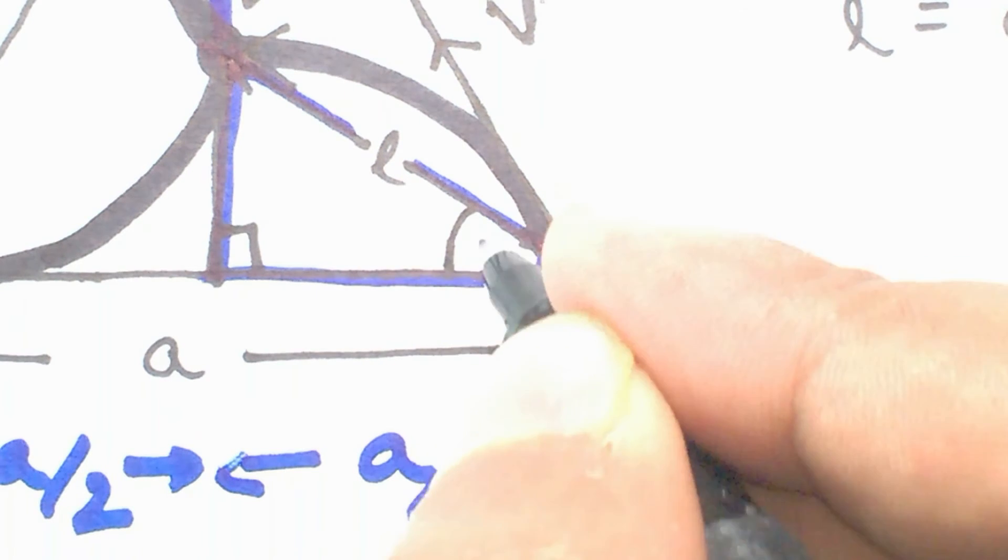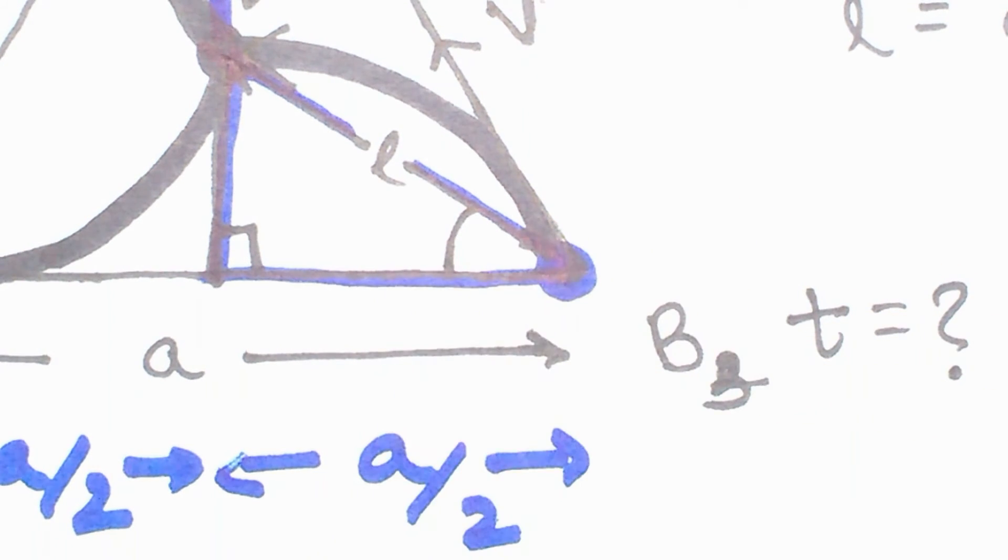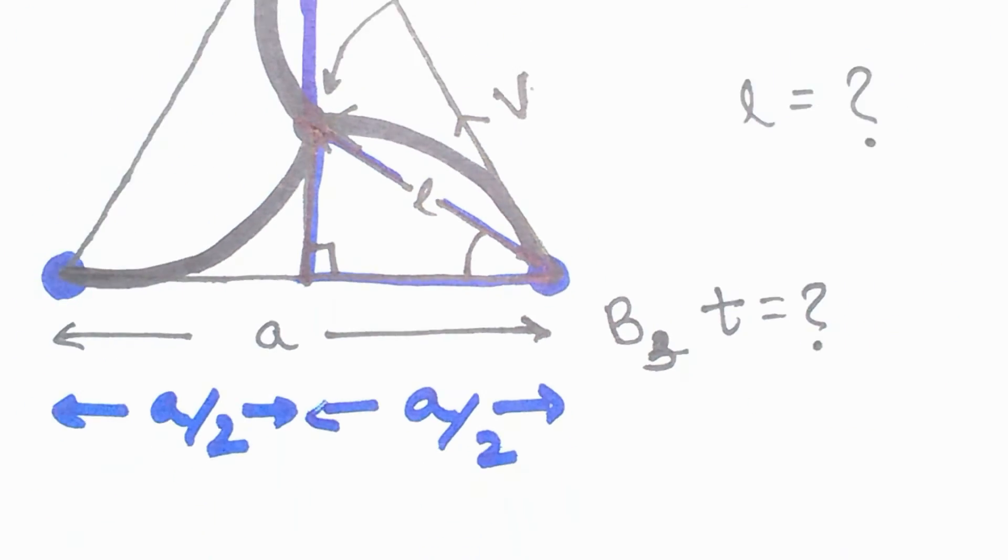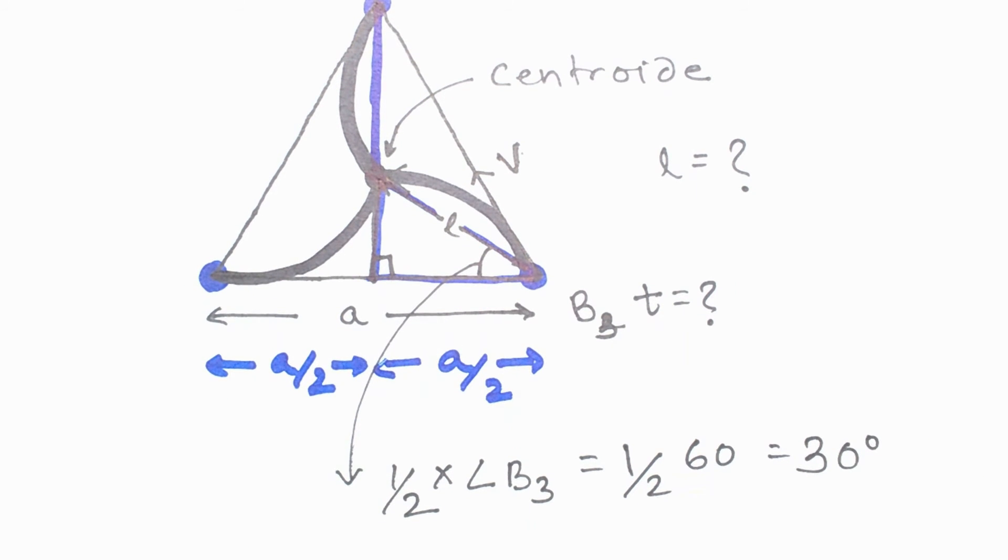And the angle between the base of this right angle triangle and the hypotenuse, which we want to calculate the length of, will be half of the angle that the two adjacent sides of this equilateral triangle is going to make, which happens to be half of 60 degrees, which means 30 degrees.